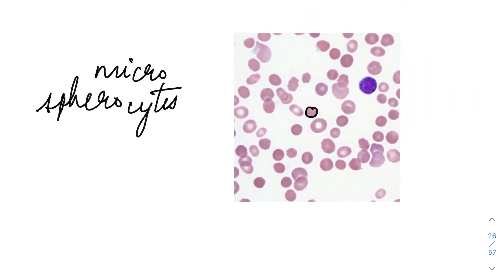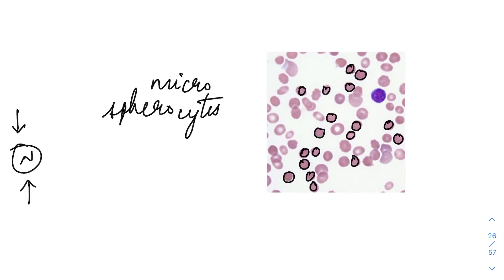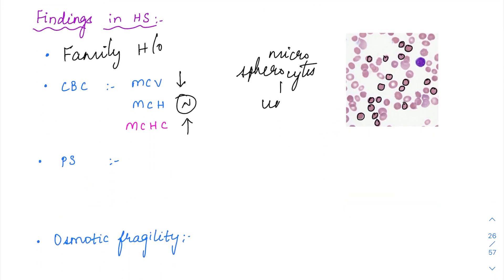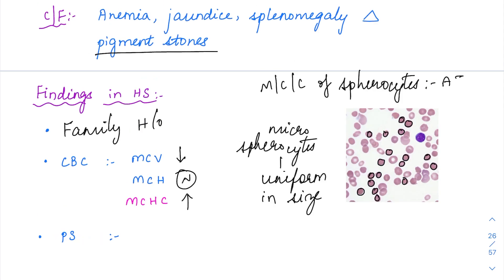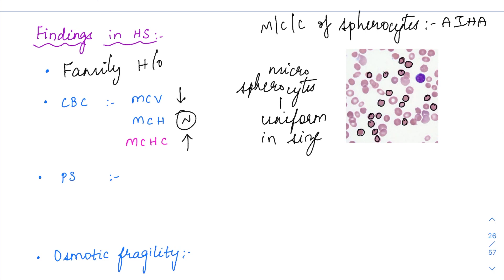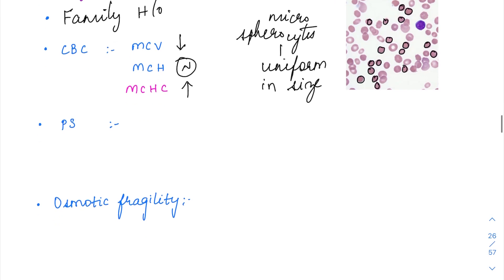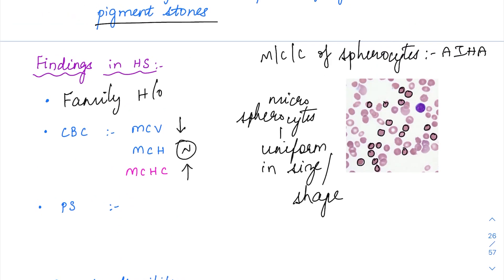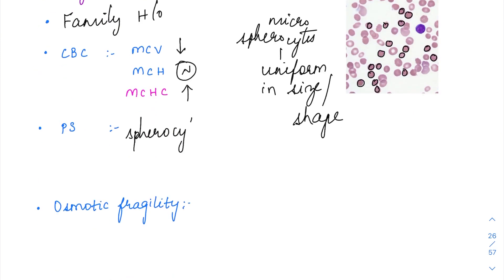In the peripheral smear image, all of the RBCs do not have a pallor — they just have a uniform pinkish appearance. These are the microspherocytes, which are uniform in size and shape in hereditary spherocytosis. Spherocytes are not specific for HS alone — they can be seen in G6PD deficiency and autoimmune hemolytic anemia. In fact, the most common cause of spherocytes is autoimmune hemolytic anemia. In HS the microspherocytes are uniform in size and shape, while in autoimmune hemolytic anemia they have altered, differing sizes and shapes.